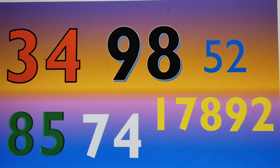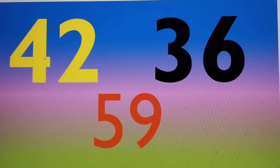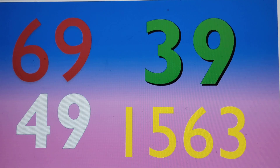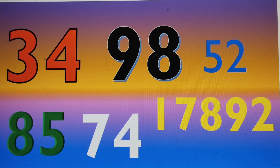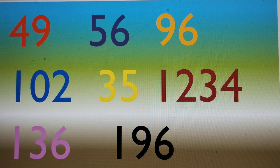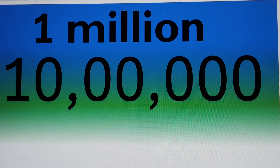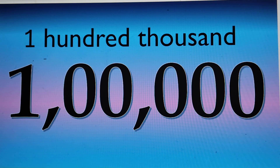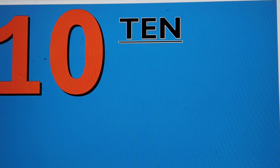Can you guess the number in green? 85. The number in red? 59. The number in yellow? 1563. Correct. The number in black? 98. The number in yellow? 42. The number in purple? 56. This number again? 1,000,000. This number again is? 100,000. This beautiful number is? 10. Number 10.